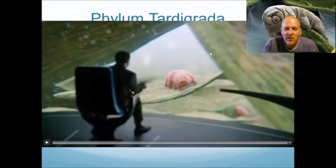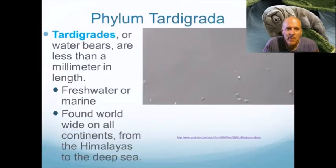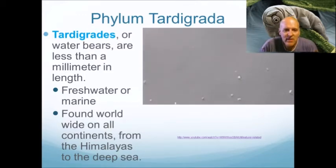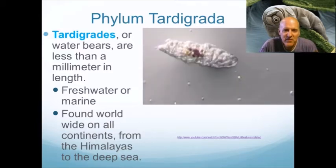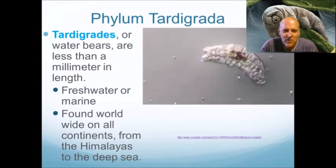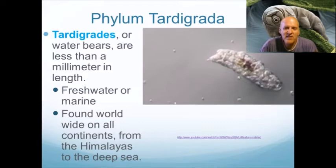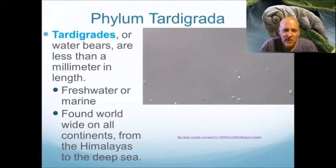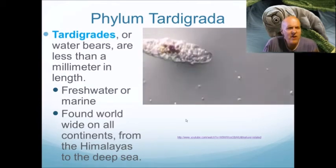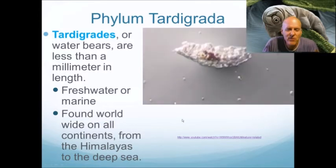Next is phylum Tardigrada — there's a video on Schoology for you to watch. Tardigrades, or water bears, are less than a millimeter in length and can be found in freshwater and marine environments all over the world, on all continents — including Antarctica, unlike most animals. They're even found in the desert; when it rains they absorb water and start moving around.